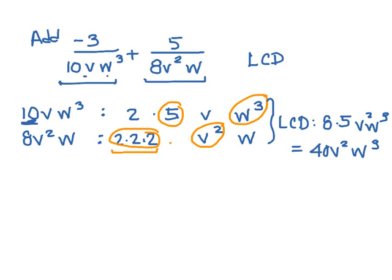So now that we've found our least common denominator, just like we've done before, we're going to rewrite each of our expressions in terms of that common denominator. So, if I take negative 3 over 10vw cubed, I want to get that to be 40v squared w cubed.